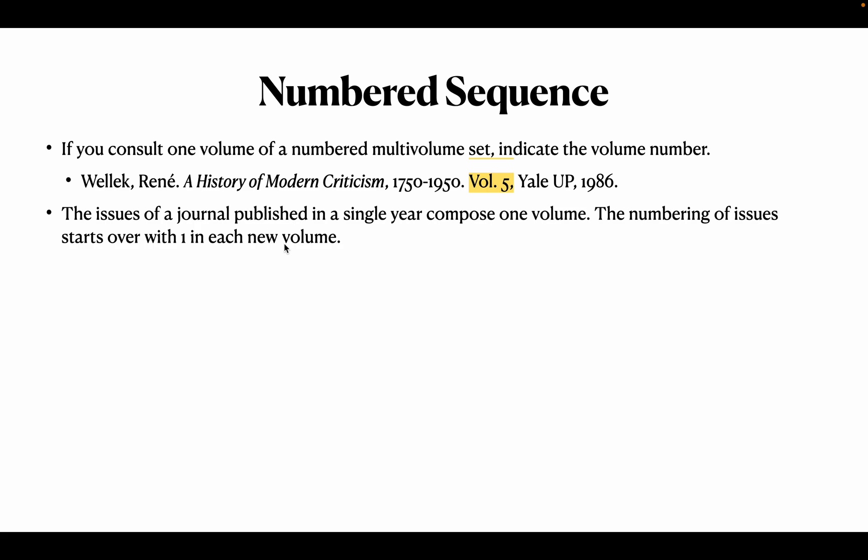The issues of a journal published in a single year compose one volume. Volume 1 means the first year; volume 25 means the 25th year of publication. The numbering of issues starts over with one in each volume. Within every year, if it is a monthly journal, there will be 12 issues. So first year, volume 1, first month: volume 1, issue 1. Second year, February will be volume 2, issue 2.